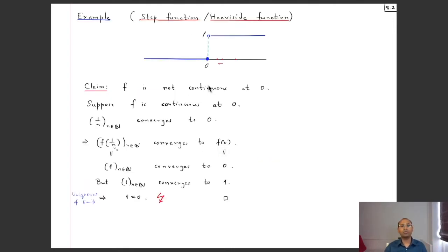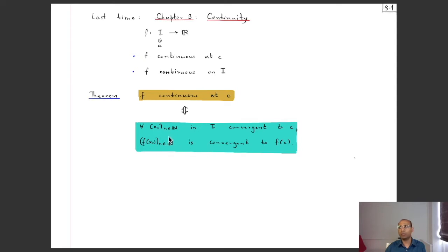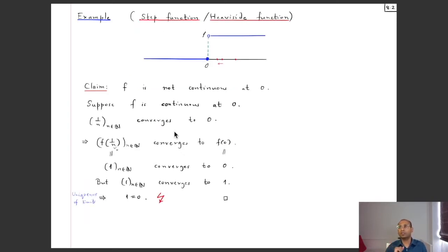We want a sequence in the domain converging to 0 but for which f(xₙ) does not converge to 0. If we take a sequence approaching 0 from the left (all xₙ negative), then f(xₙ) = 0 for each term, giving the constant sequence 0, 0, 0, … which converges to 0 = f(0). That gives no contradiction. So approaching from the left won't work — we need a sequence going to 0 through positive values.